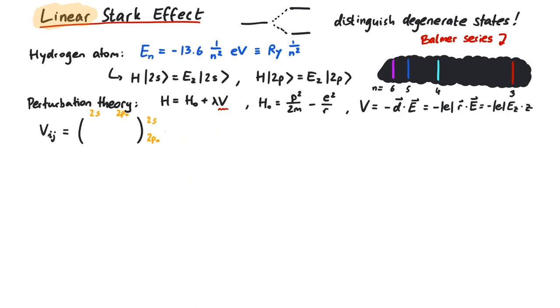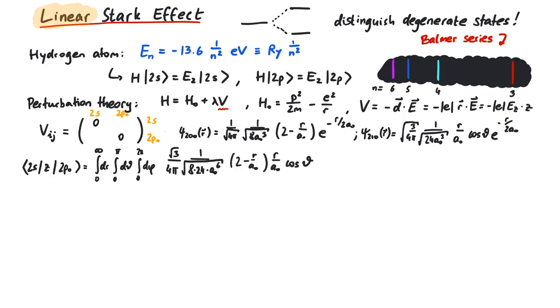These wave functions are listed in most textbooks, so we can easily write down the integral representation of this matrix element. Don't forget to include every term of the wave function, as well as the Jacobian of spherical coordinates, and of course the z of the potential. The result is minus 3a, where a is Bohr's radius.